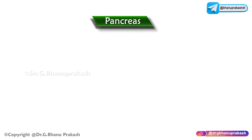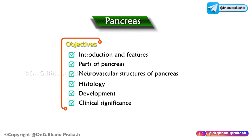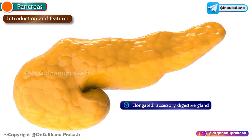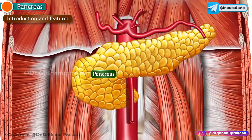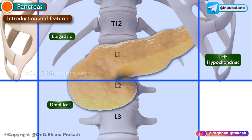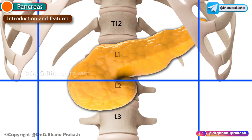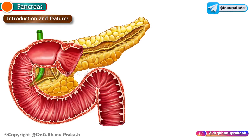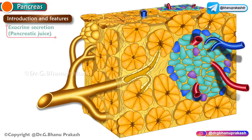The topic of discussion for today's session is the anatomy of the pancreas as well as its clinical importance. The pancreas is an elongated accessory digestive gland that lies on the posterior abdominal wall. It lies in the epigastric, umbilical, as well as left hypochondriac regions at the level of L1 and L2 vertebra. It is an exo-endocrine gland.